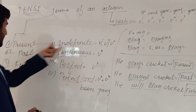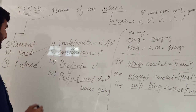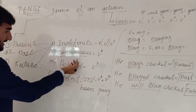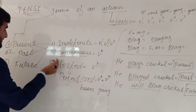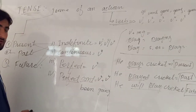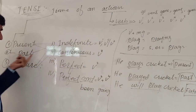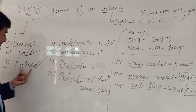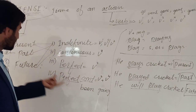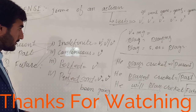So the twelve tenses are: present indefinite, past indefinite, and future indefinite; present continuous, past continuous, and future continuous; present perfect, past perfect, and future perfect; and present perfect continuous, past perfect continuous, and future perfect continuous.